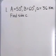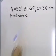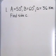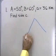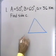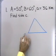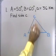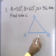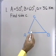Here's our first problem. Suppose we have a triangle in which angle A is 50 degrees, angle B is 60 degrees, and side a is 36 kilometers. We want to find the length of side c. The first thing I'm going to do is draw a triangle for reference — it doesn't have to be accurate. I'll label the angles A, B, and C, and the sides a, b, and c.